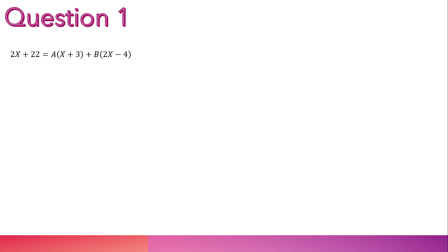2x plus 2 equals A times x plus 3 plus B times 2x minus 4. Let x equals plus 2. And we get this. And we find that A equals 5.2.